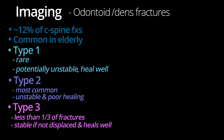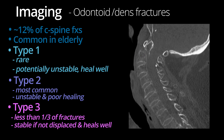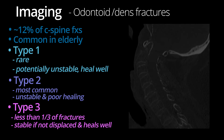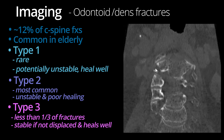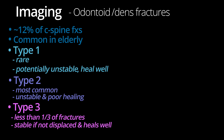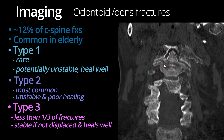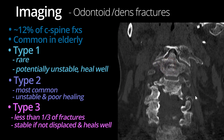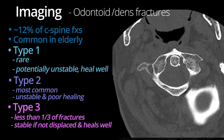Let's review a few cases. Here is an example of an acute obliquely oriented type 2 odontoid fracture with posterior displacement of the odontoid relative to the body of C2. On the coronal, you see the fracture line through the base of the dens, and as we scroll posteriorly, you see the displaced odontoid. Here is an example of a subtle type 3 odontoid fracture that involves the right lateral mass of C2 and extends into the body. The fracture is also apparent on the axial view.